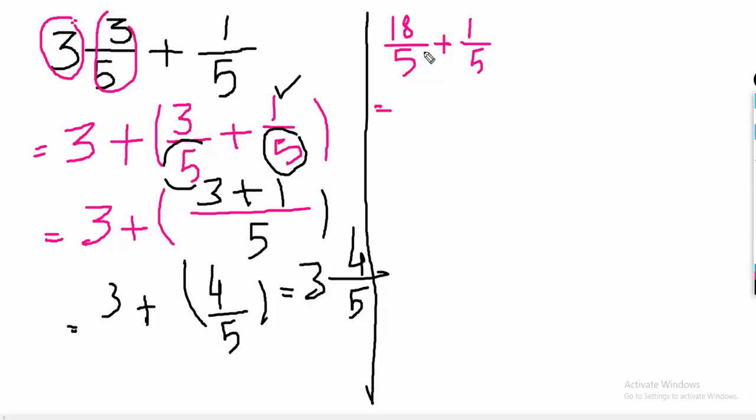Look, this is 5, this is 5, this is 5, the same denominators, the LCM would be 5. Divide 5, this 5, then 5 divided by 5, 1, 18 ones are 18 plus 5 divided by 5, 1, 1 multiply 1 is equal to 1. Then, the answer is 19 over 5.